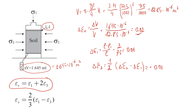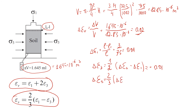Finally, we calculate the change in shear strain using the formula: shear strain equals 2 over 3 times the difference between axial and radial strains. That gives us approximately 0.02.